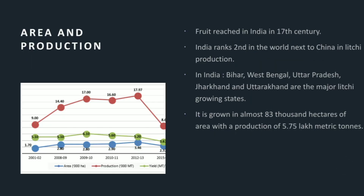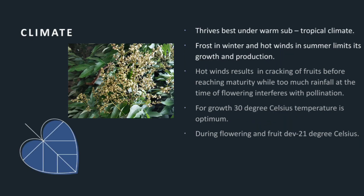Area and production: The fruit reached India in the 17th century. India ranks second in the world, next to China, in lychee production. In India, Bihar, West Bengal, Uttar Pradesh, Jharkhand, and Uttarakhand are the major lychee growing states. It is grown in almost 83,000 hectares of area with a production of 5.75 lakh metric tons.